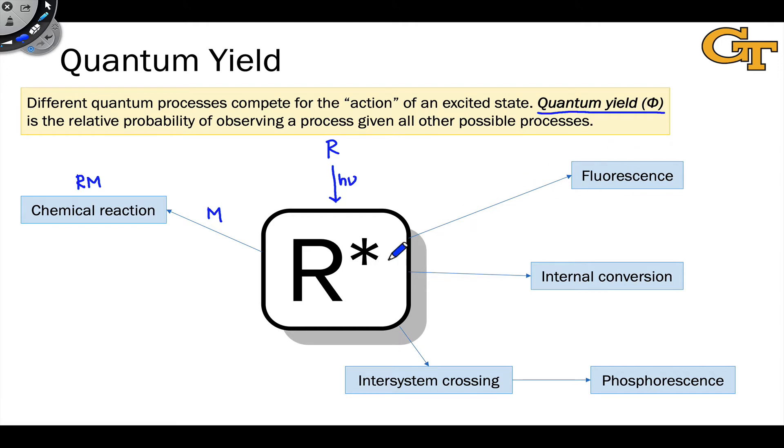Fluorescence, emission of a photon from the excited singlet state, let's say this is a singlet state which we'll represent with the superscript 1 for the time being. Emission of a photon to go back down to the ground state. Once R star is in the ground state, chemical reaction is impossible. So this is a one-way arrow in a different direction.